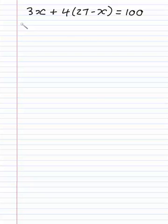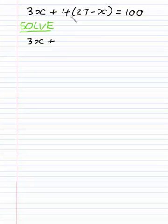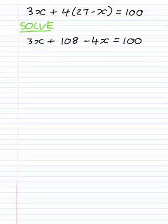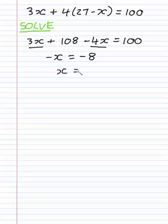Now that we've set up the equation, we need to solve it — for most people this is actually the easiest part. Let's expand the brackets: 3X plus 108 minus 4X equals 100. Collecting like terms: 3X minus 4X gives minus X, so minus X plus 108 equals 100. Subtracting 108 from both sides: minus X equals minus 8, which means X equals 8.